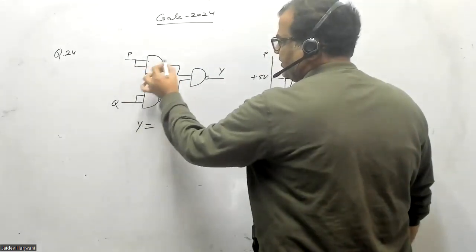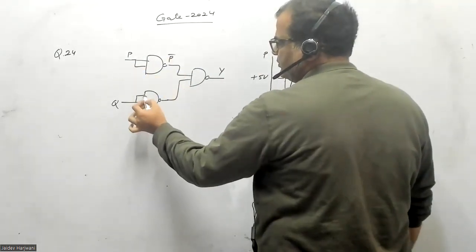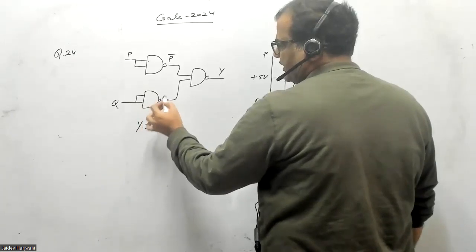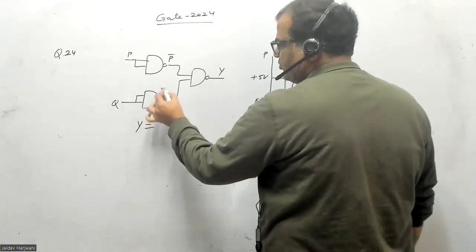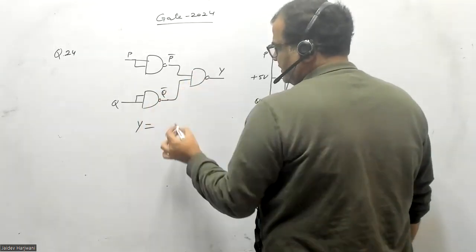Let us find out. Now you want to find what is V. This is P, this will give you P bar. Similarly, this Q will be Q, and the NOT gate is there. This will be Q bar.